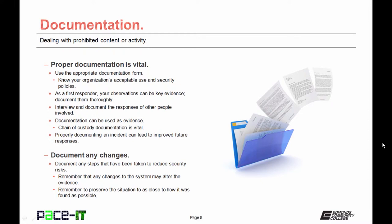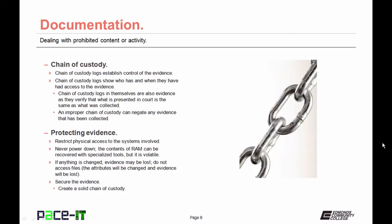Some of the things that you need to document are any changes that have occurred since you first responded to the prohibited content or activity. Document any steps that have been taken to reduce security risks. Remember that any changes to the system may alter the evidence, and preserve the situation as close to how it was found as possible.